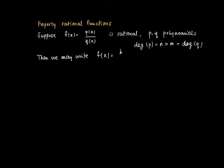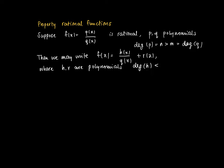Then we may reduce this rational function. We may write it as a rational function h of x divided by q of x. So we have the same denominator but h is now a polynomial of lower degree than q, and the remainder term is written r of x, which is a polynomial.